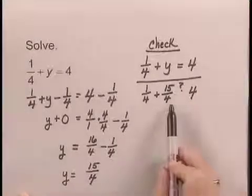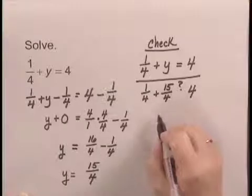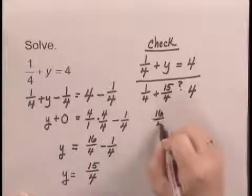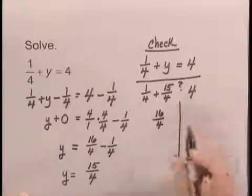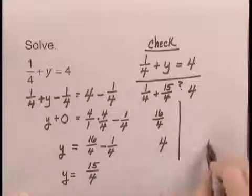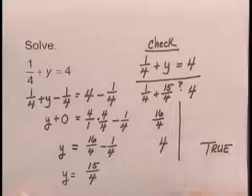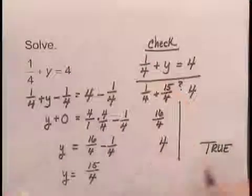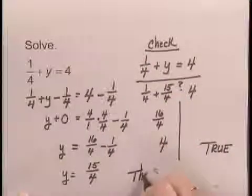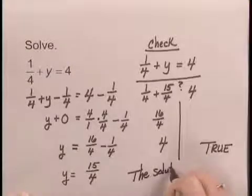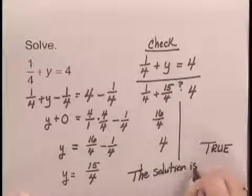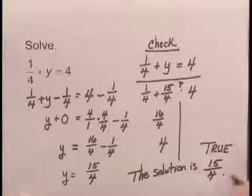The common denominator, so I add the numerators, 1 plus 15 is 16 over 4. And 16 over 4 does equal 4. So since this is true, 4 equals 4, the solution is 15 fourths.